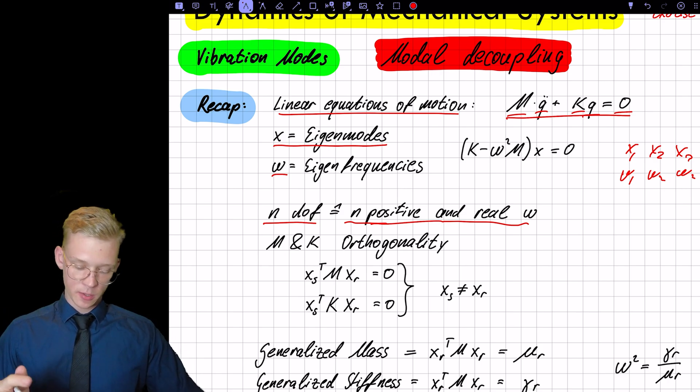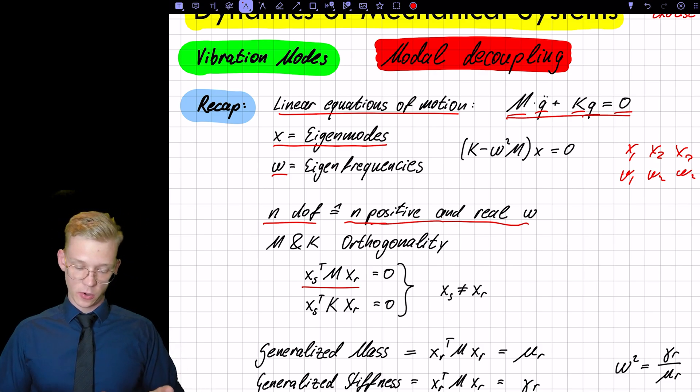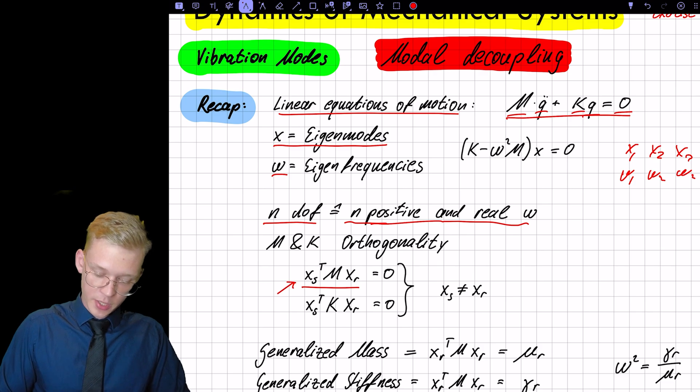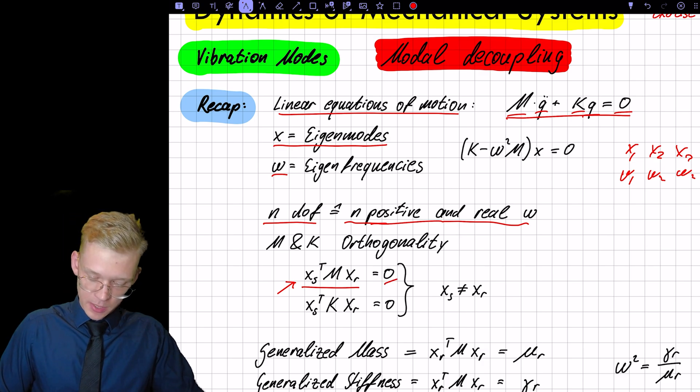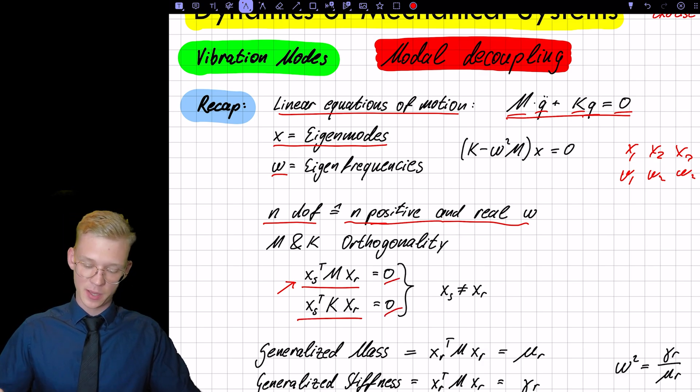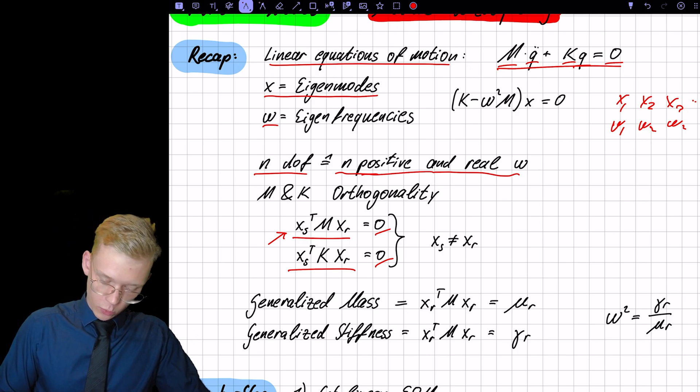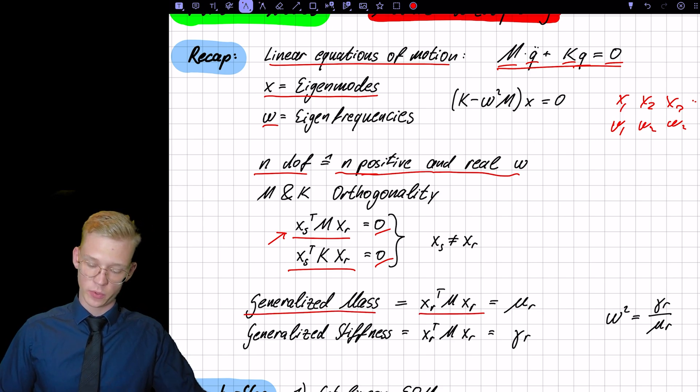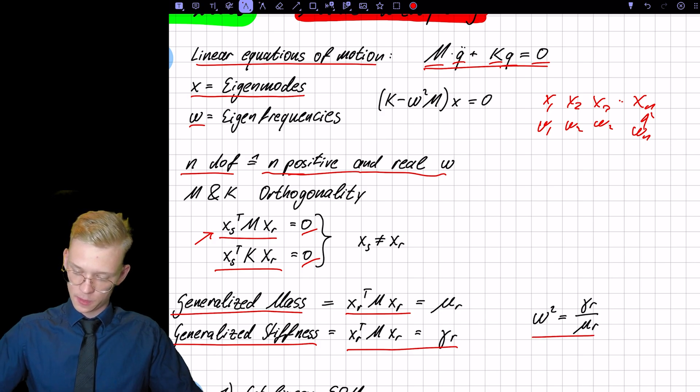Recap to the m and k orthogonality. If two eigenvectors or eigenmodes are, if we pre and post multiply different eigenmodes onto m and k, they will be zero. So this is m and k orthogonality. If we pre and post multiply the same eigenmode, we get the generalized mass if we do that with the mass matrix, and a generalized stiffness. So we get the modal stiffness.